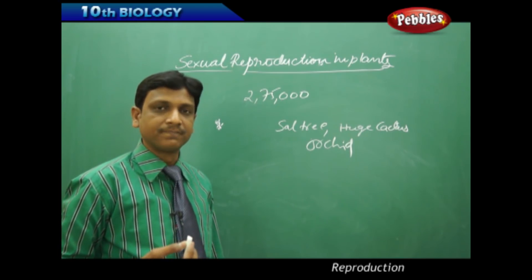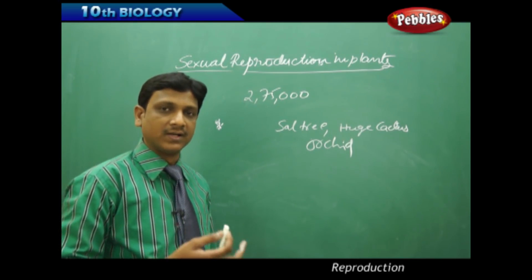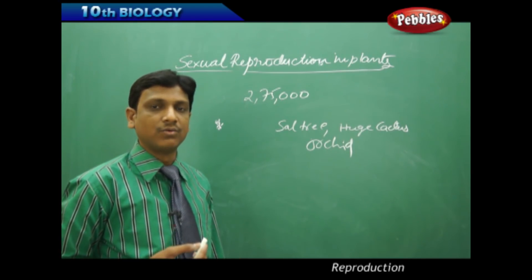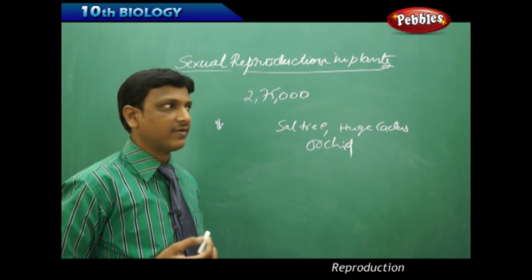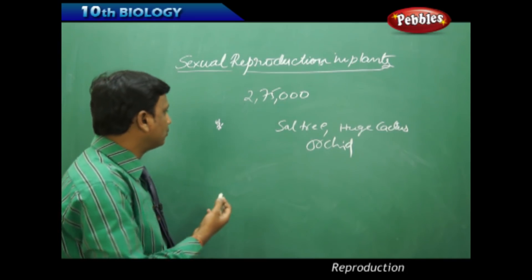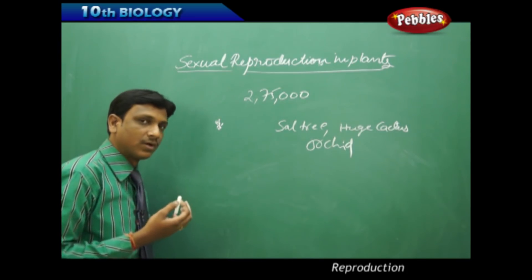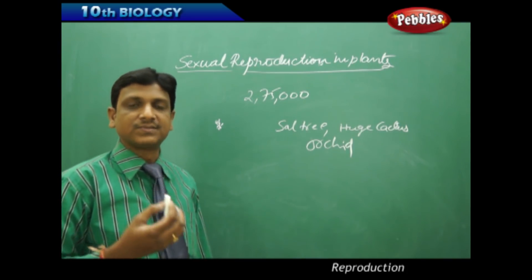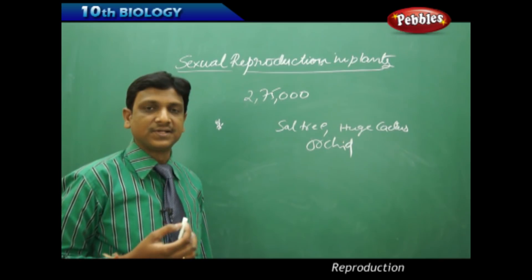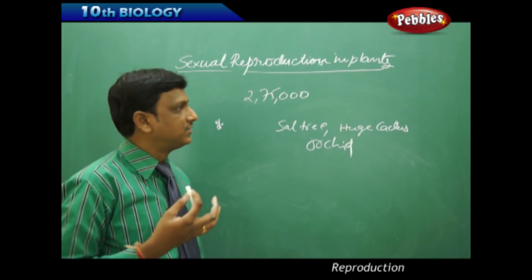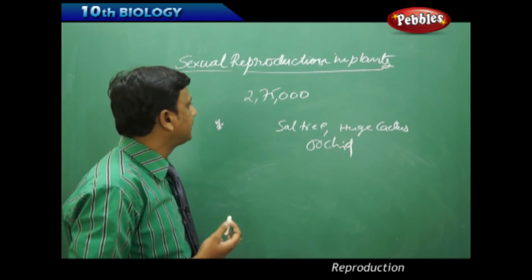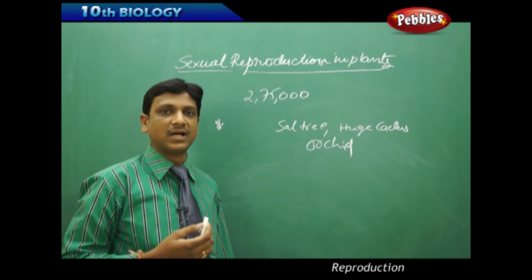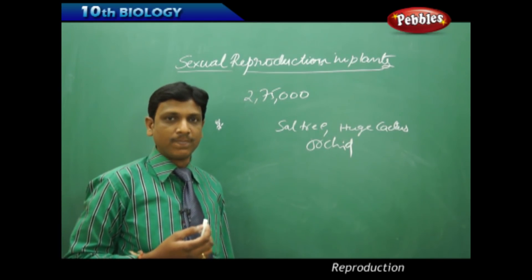Certain flowering plants are creepers or runners on the ground. Certain flowering plants are very huge trees. Some are water-floating, and some are very small in size. So this much variety of flowering plants is found.